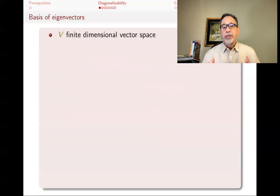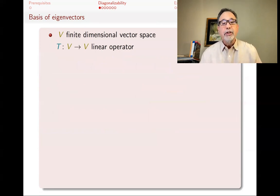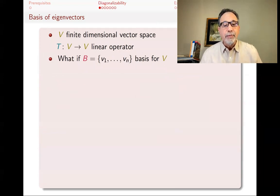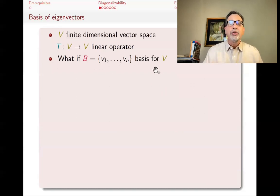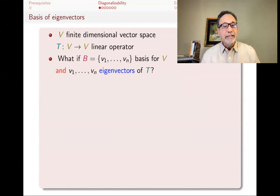Let's start with a thought experiment. Suppose you have a finite dimensional vector space and a linear operator T — a linear transformation from V to itself. By hook or crook, you find yourself a basis B for this vector space, with ordered elements V1 through VN. It happens that V1 through VN are eigenvectors of T.